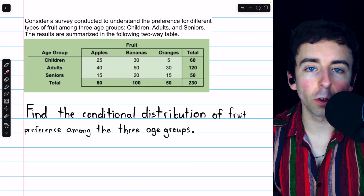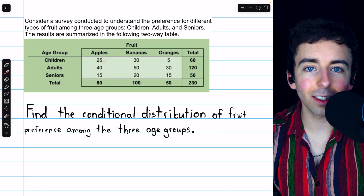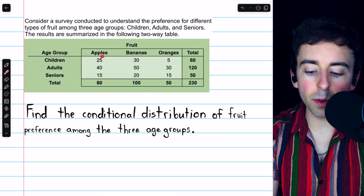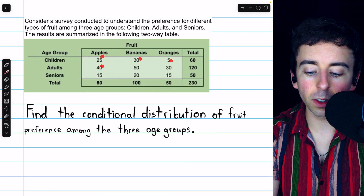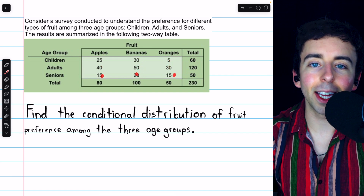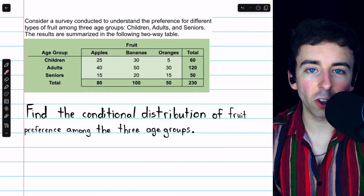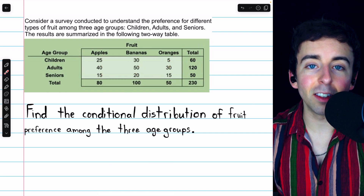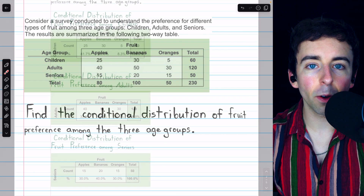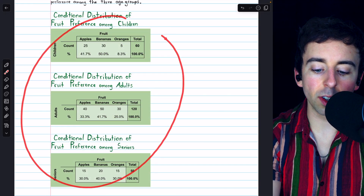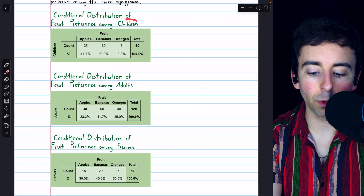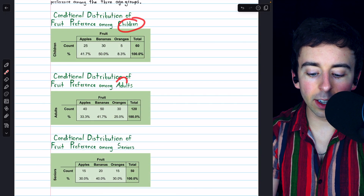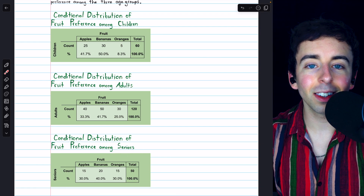In this case, the conditional variable of age group has three values — children, adults, and seniors — hence there are three conditional distributions. Again, we can view these raw counts as conditional distributions, however we really want to calculate the percentages. The solutions — the conditional distributions for children, adults, and seniors — are now on screen.